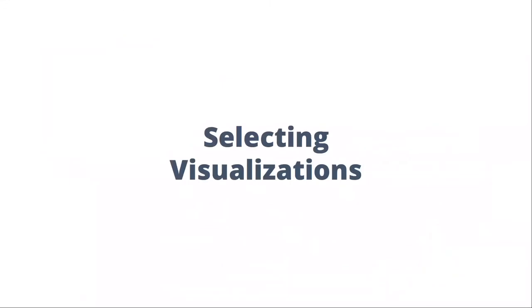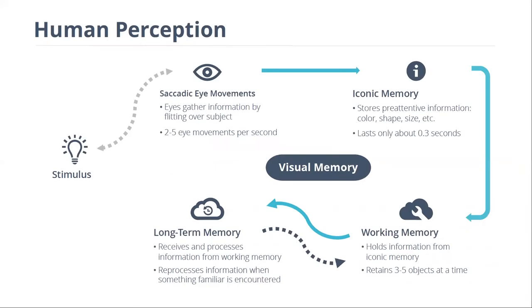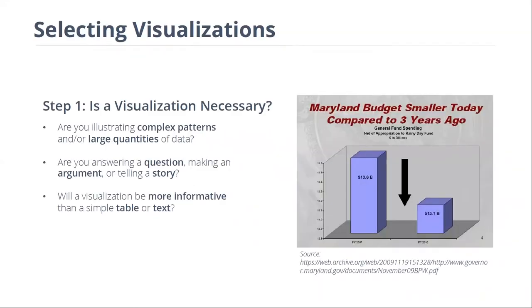Before talking about how to select visualizations, let me pause for questions. We're going to take that general knowledge of how visualizations work and bring it into practical use. We can break selecting visualizations down into a step-by-step process, where the first step is deciding if a visualization is actually necessary. We have to ask ourselves: are we illustrating a complex pattern, and/or are we using a large quantity of data? Those are subjective terms — it depends on each separate case. Here's an example of when we didn't need a visualization: a bar chart showing two slightly different numbers. Did we really need a visualization to understand that one number is higher than the other?